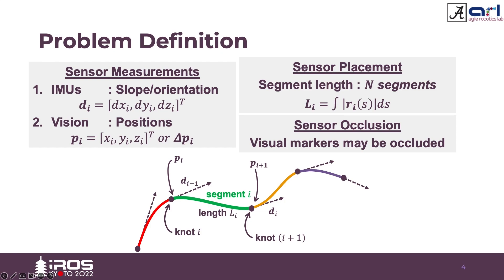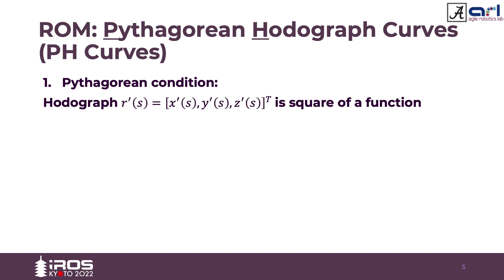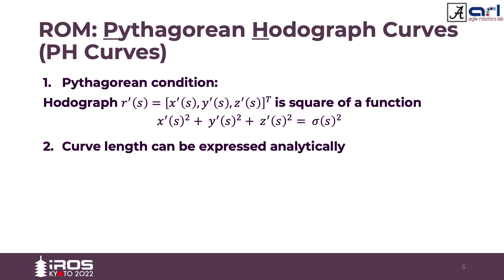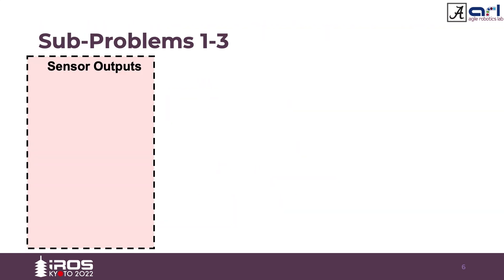The length constraint is defined using an integral equation where r_i represents the curve segment and s is the curvilinear coordinate. However, this equation does not have a closed-form solution. A special class of curves called Pythagorean Hodograph (PH) curves were used as a reduced order model. The hodograph is the first derivative of the curvilinear coordinate. For this special curve, the sum of squares of the polynomial functions results in the square of a new polynomial sigma(s), and when substituted into the length equation, it yields a closed-form solution allowing imposition of length constraints.